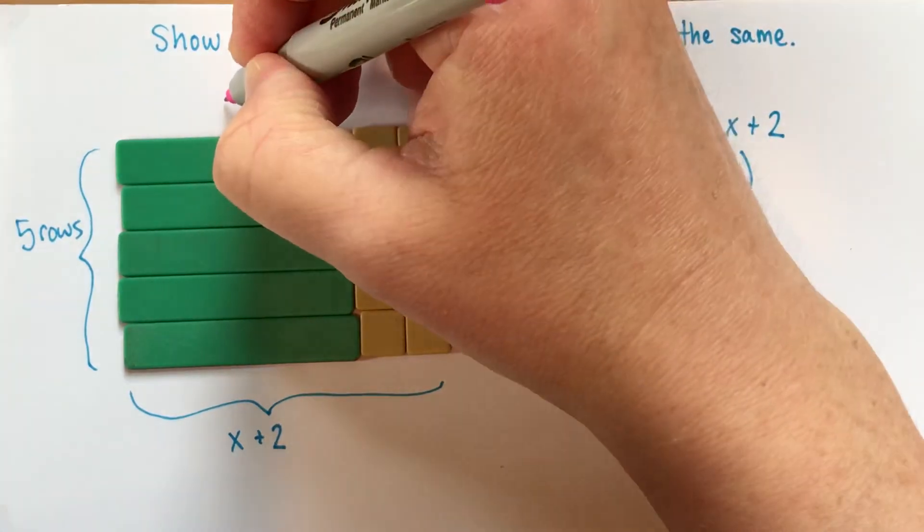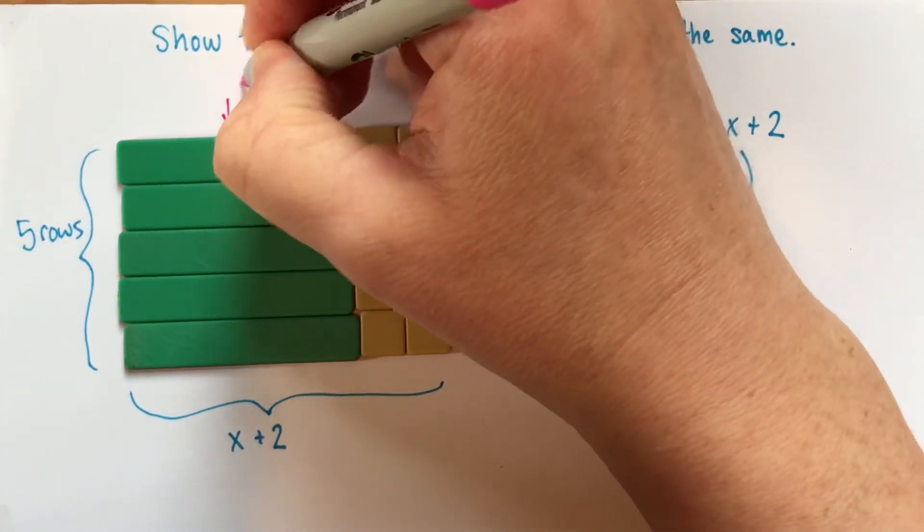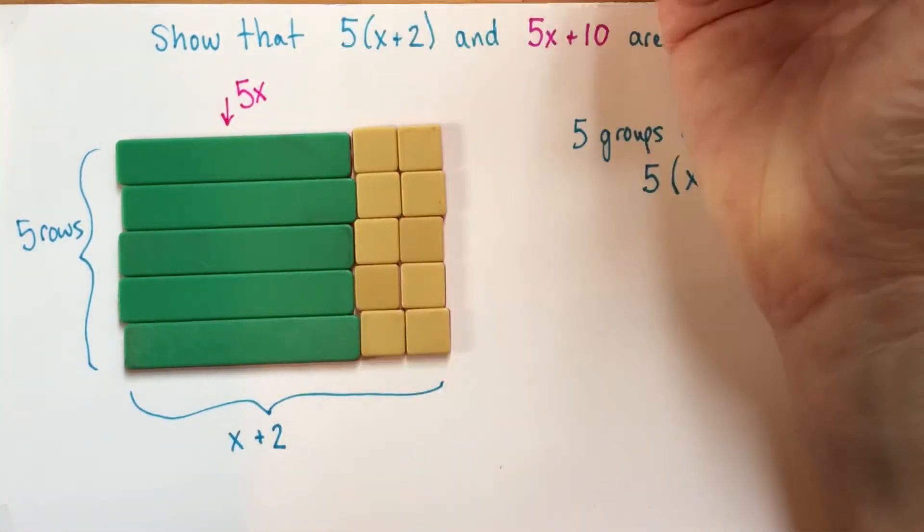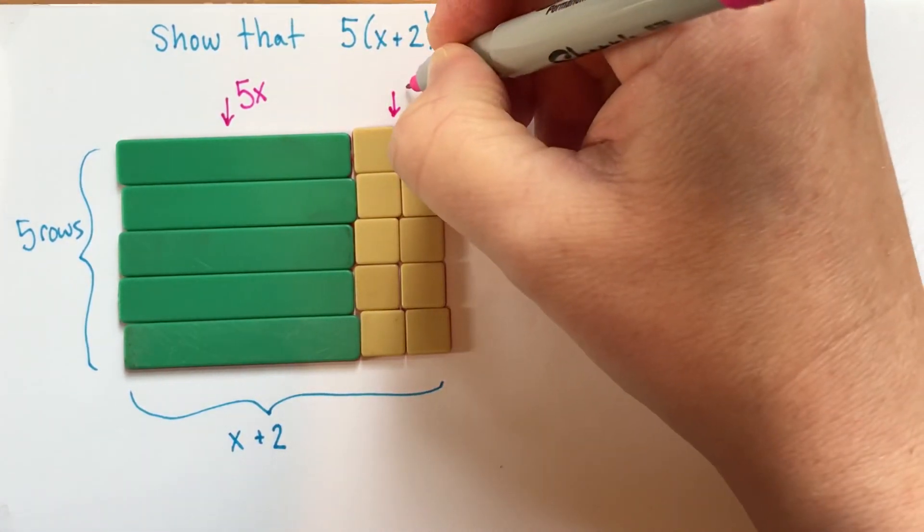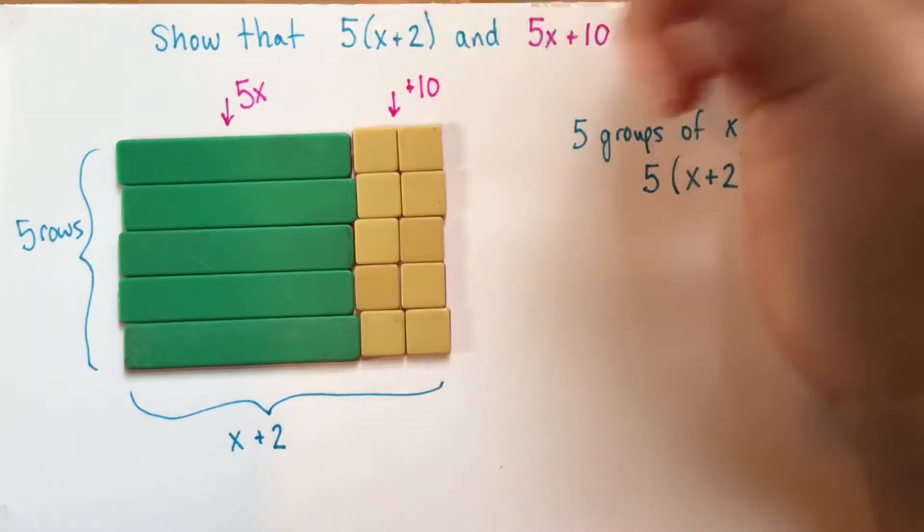I might look at this and say, well, this is 5x, and this is positive 10. These are also positive.